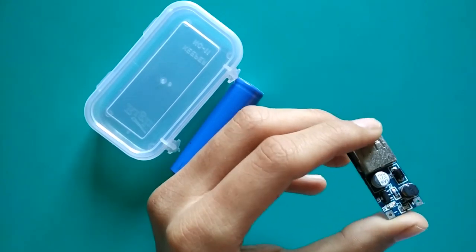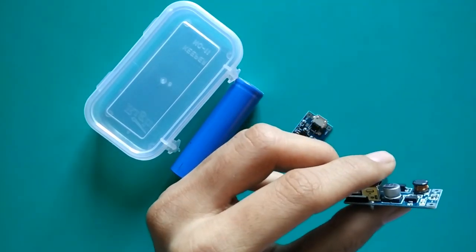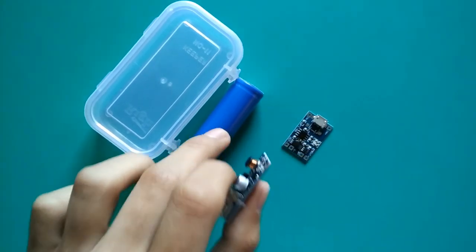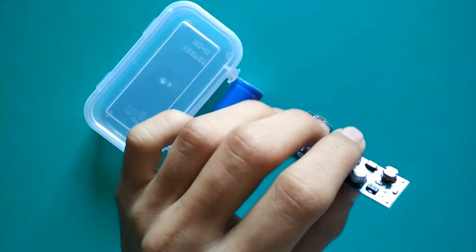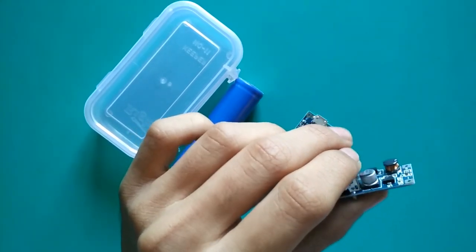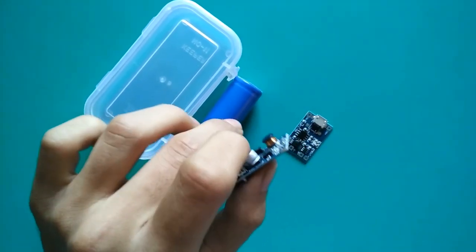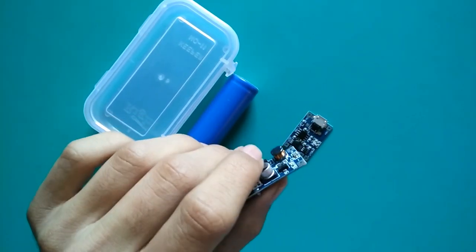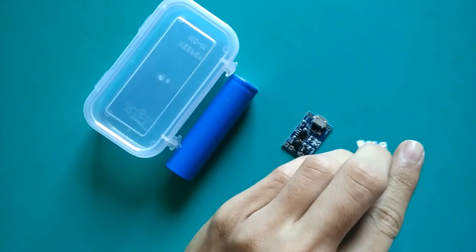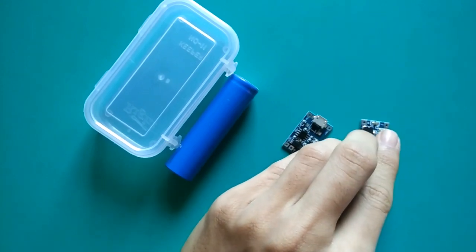It will give 200 to 300 mAh current for one single lithium ion cell and 500 to 600 mAh for double lithium ion cells. So as you increase the number of lithium ion batteries, the more charging current you will get.